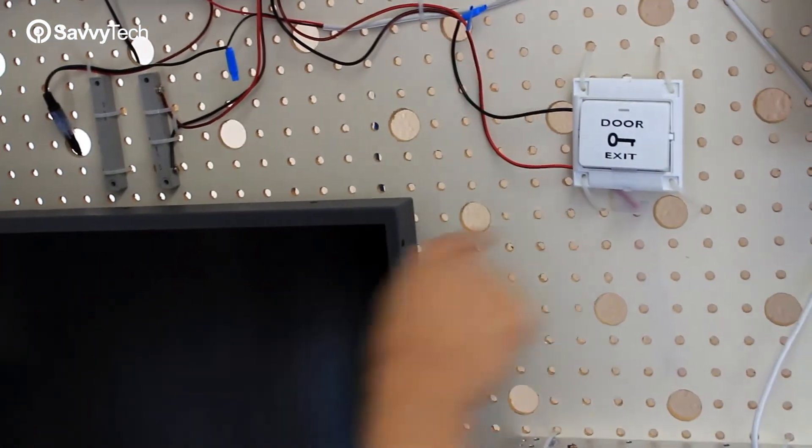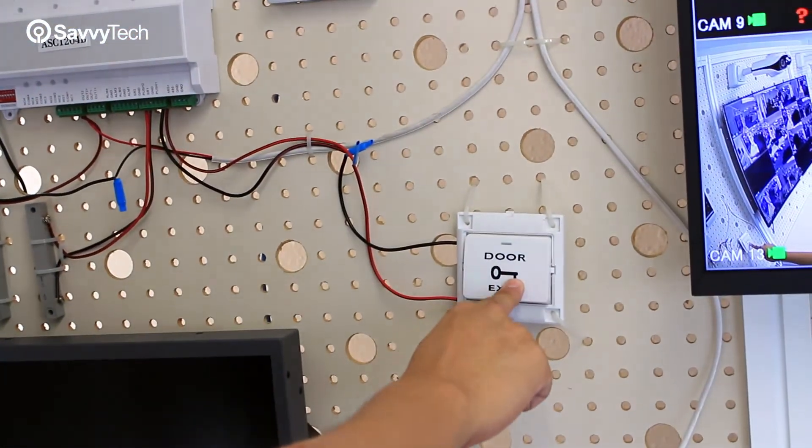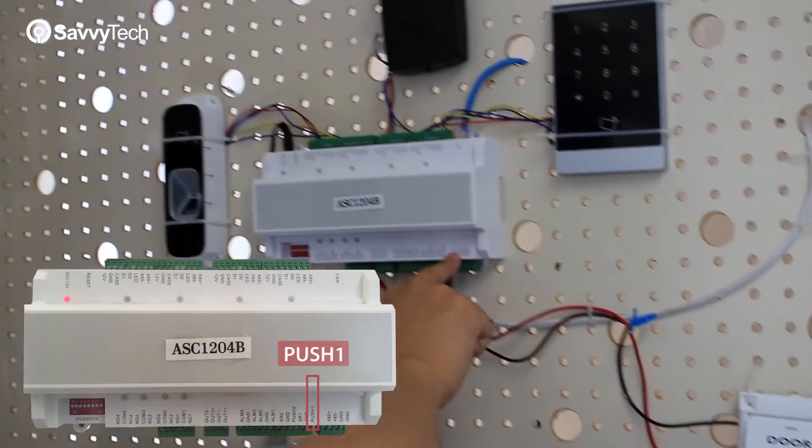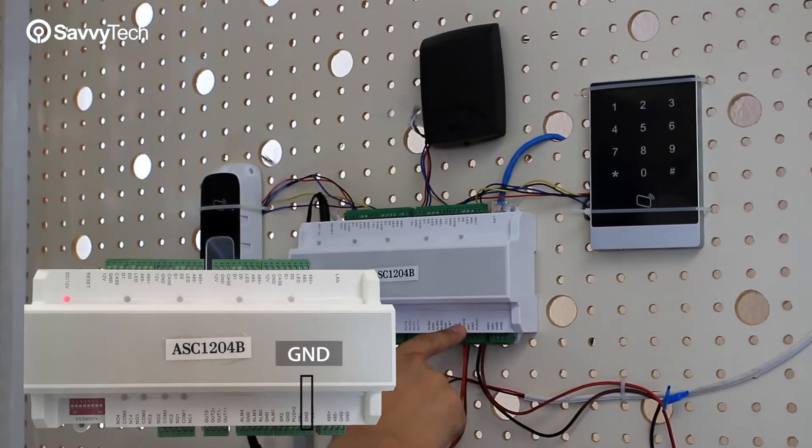The other method is to actually just push the door exit button to physically make it unlock manually. That will be connected to the push button 1 and the ground connector here, as you can see.